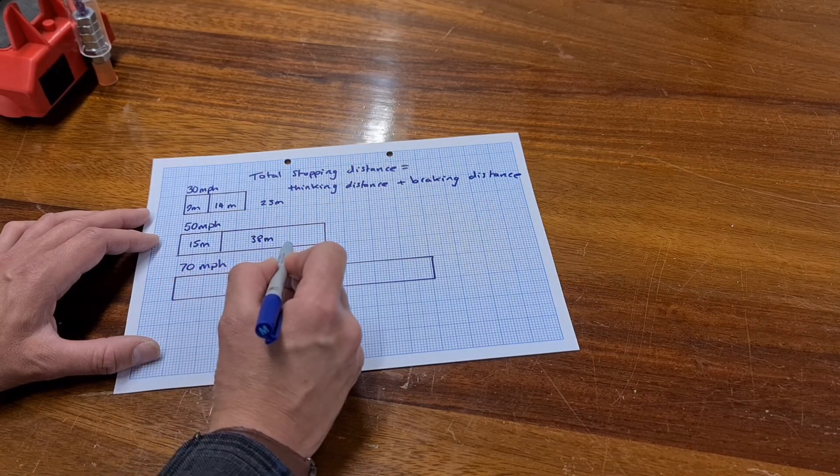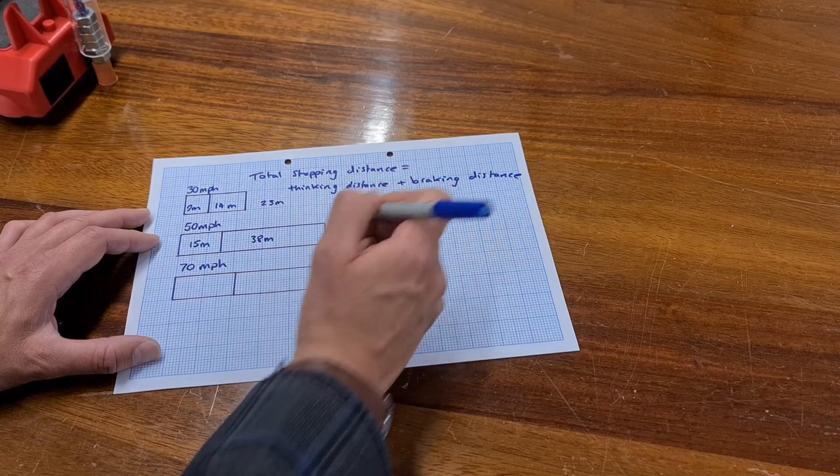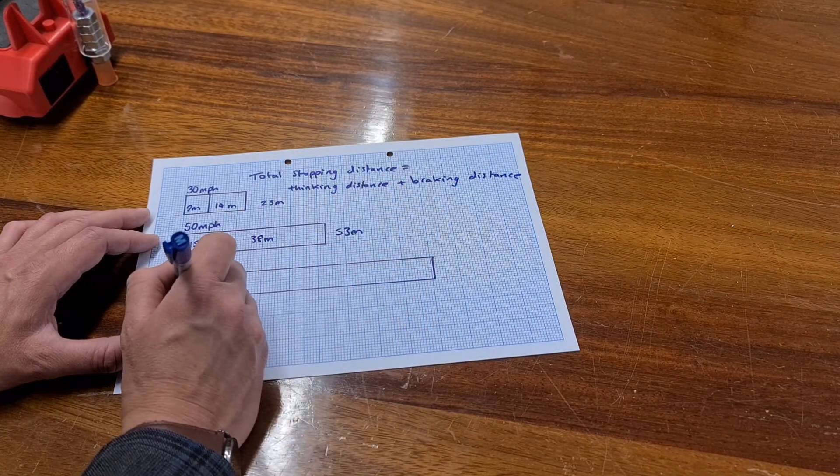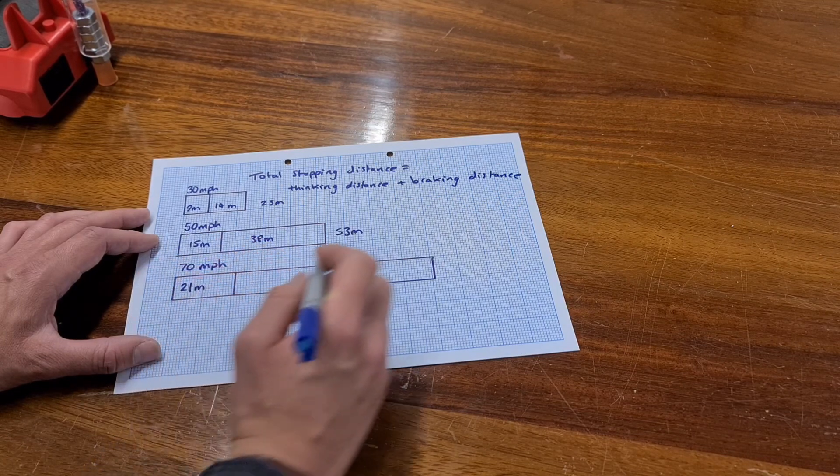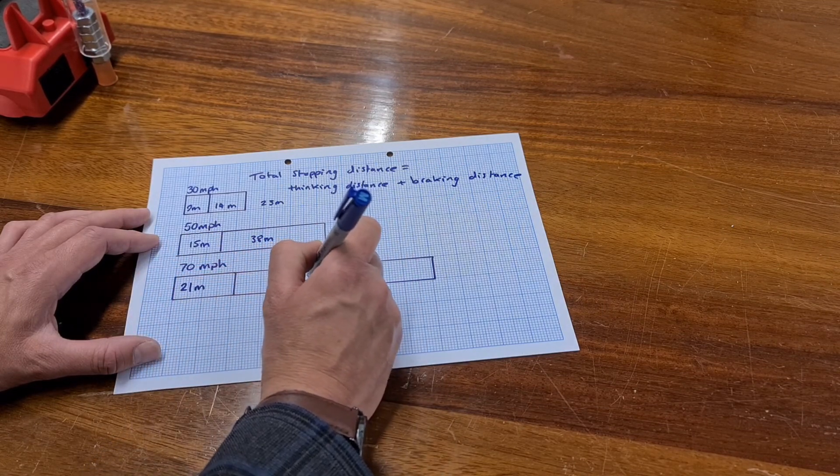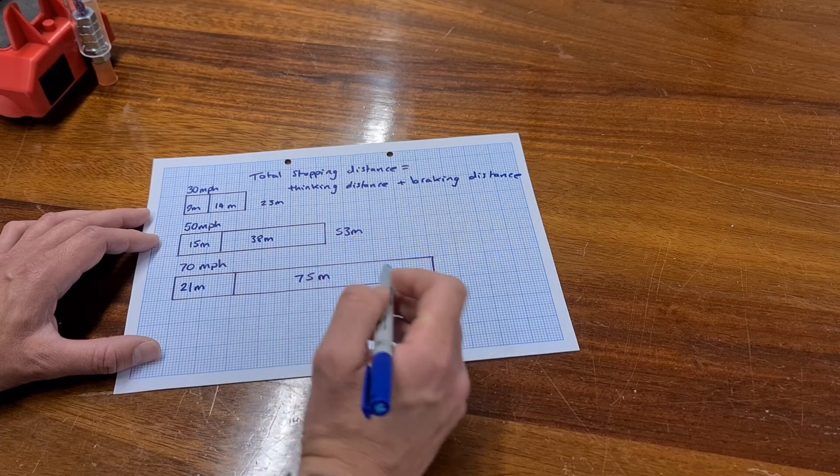So that's 10, 20, 30, 40, 53 meters in total. At 70 miles an hour it is 21 meters of thinking distance and 75 meters of braking distance.